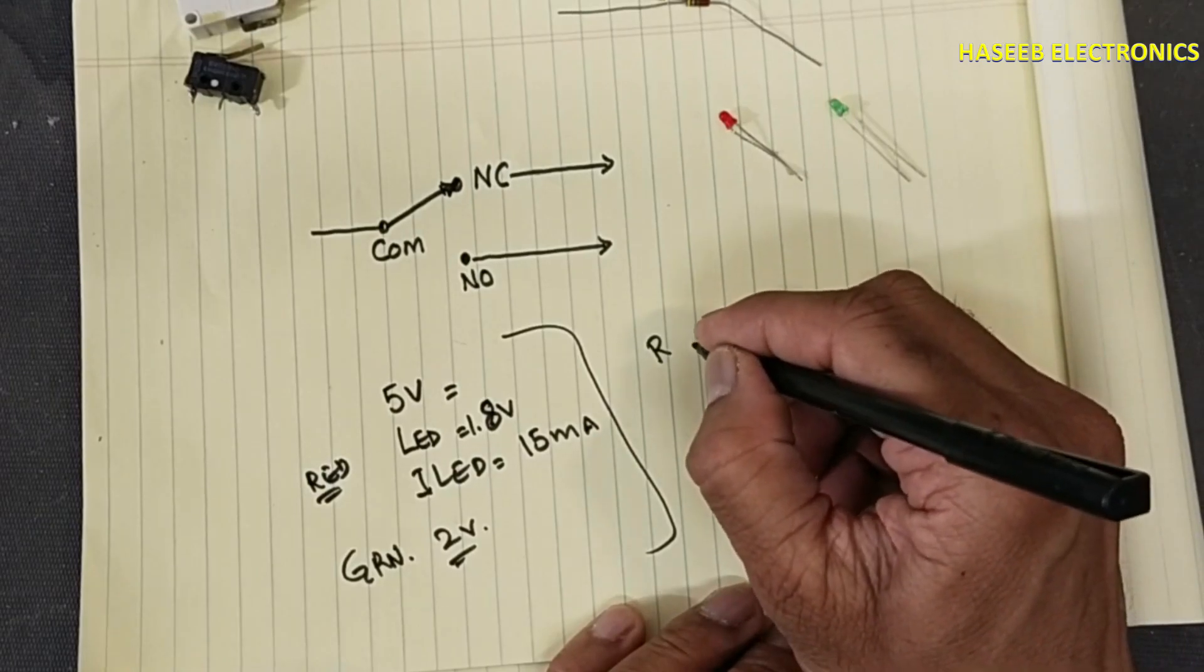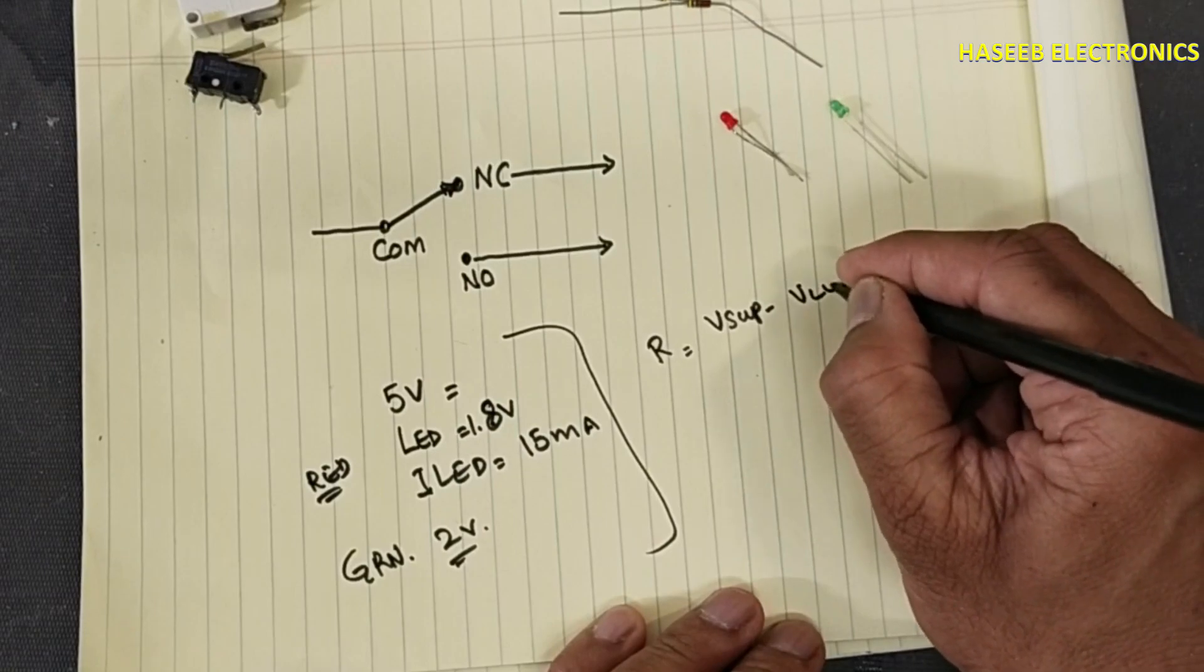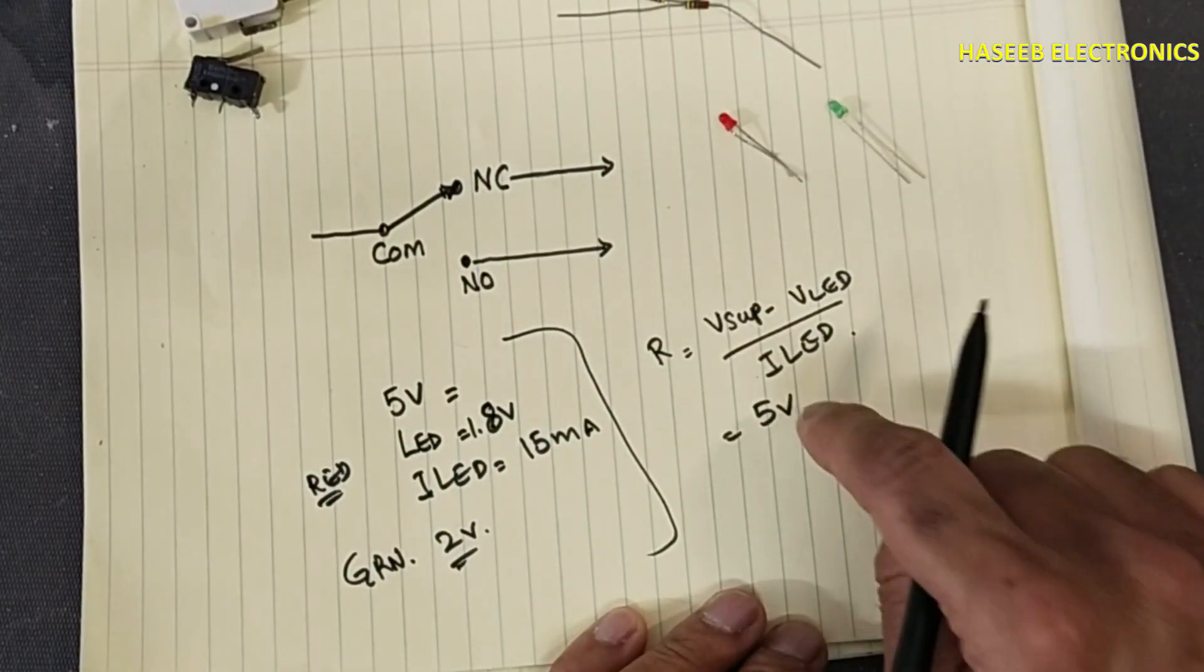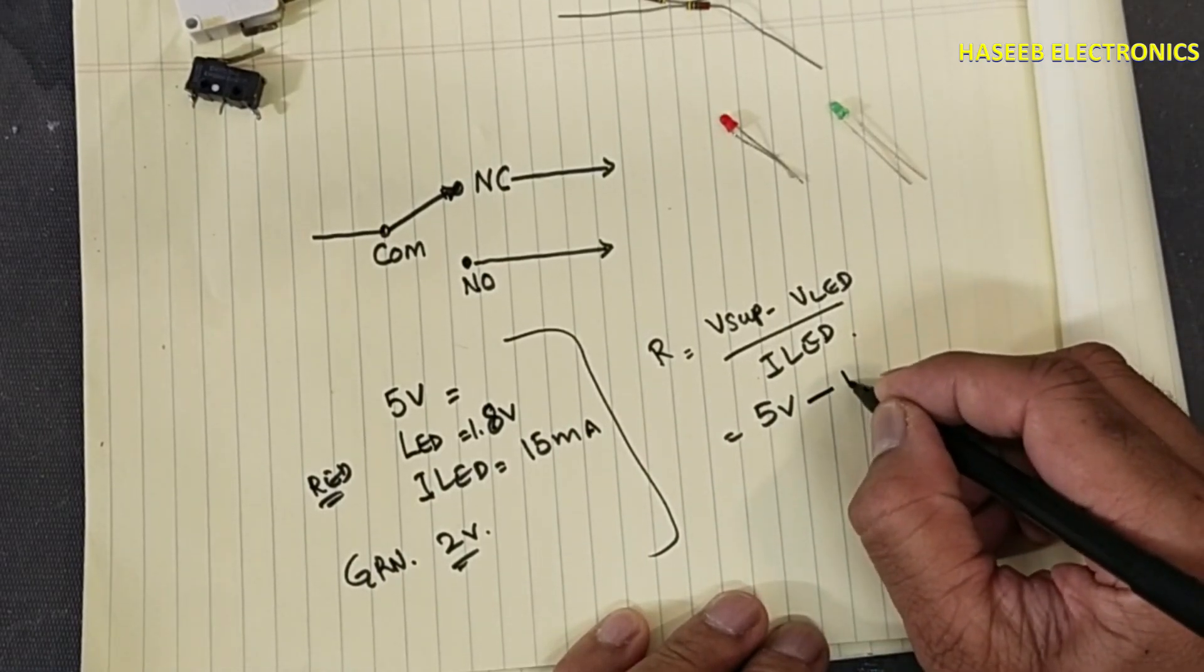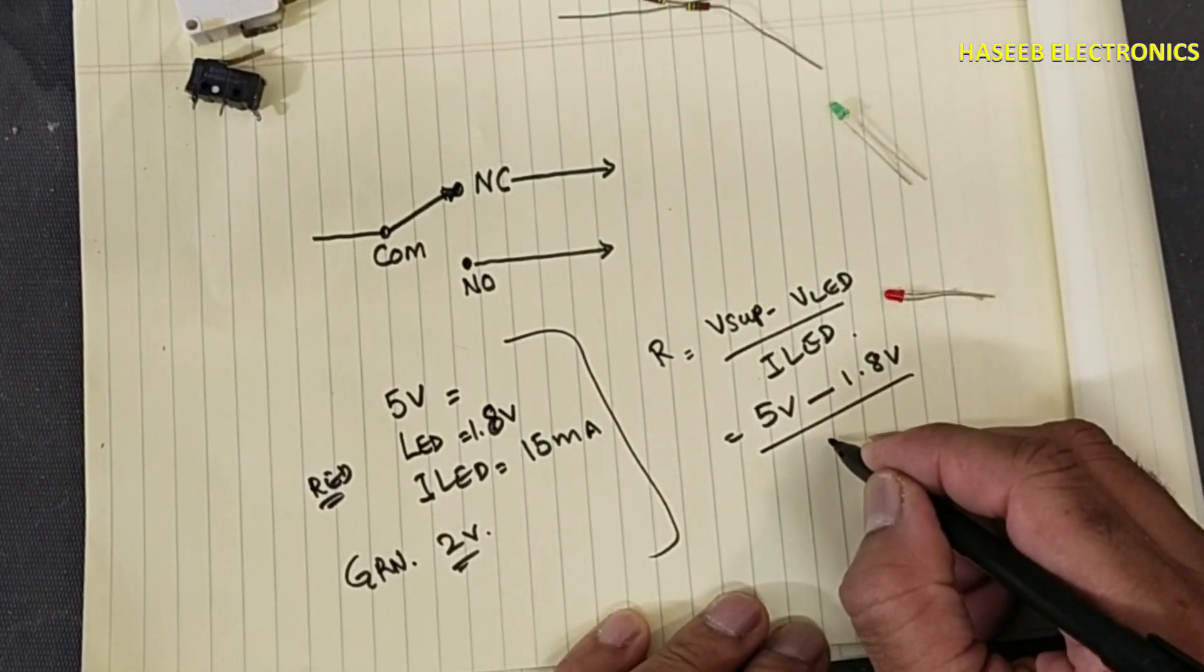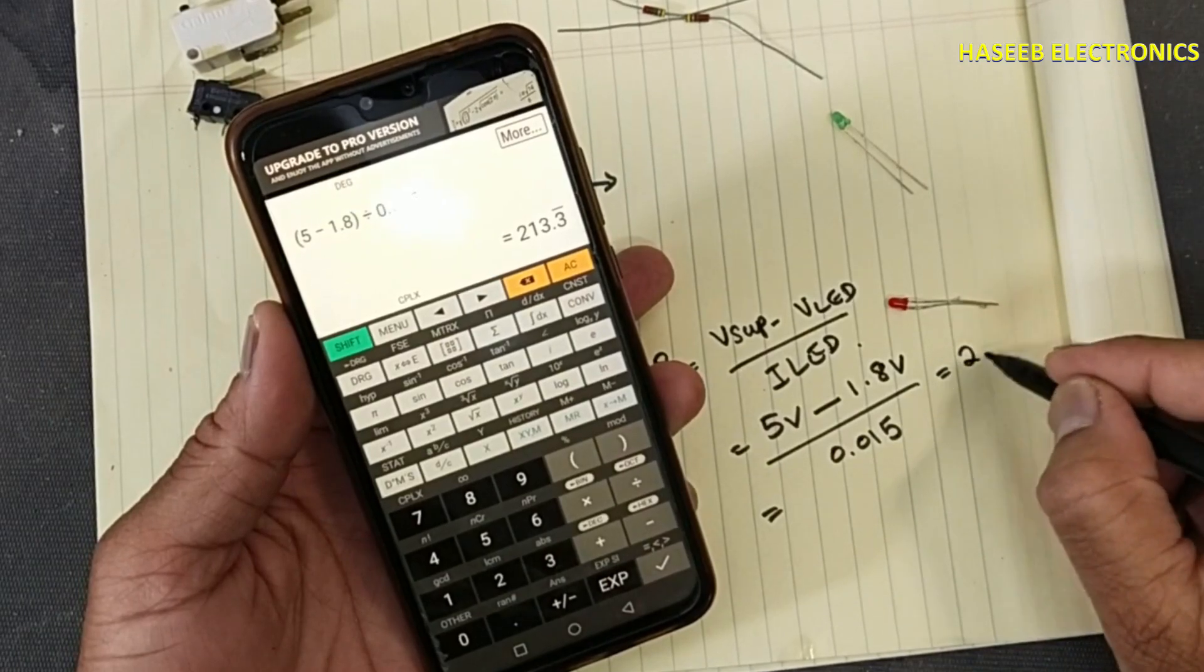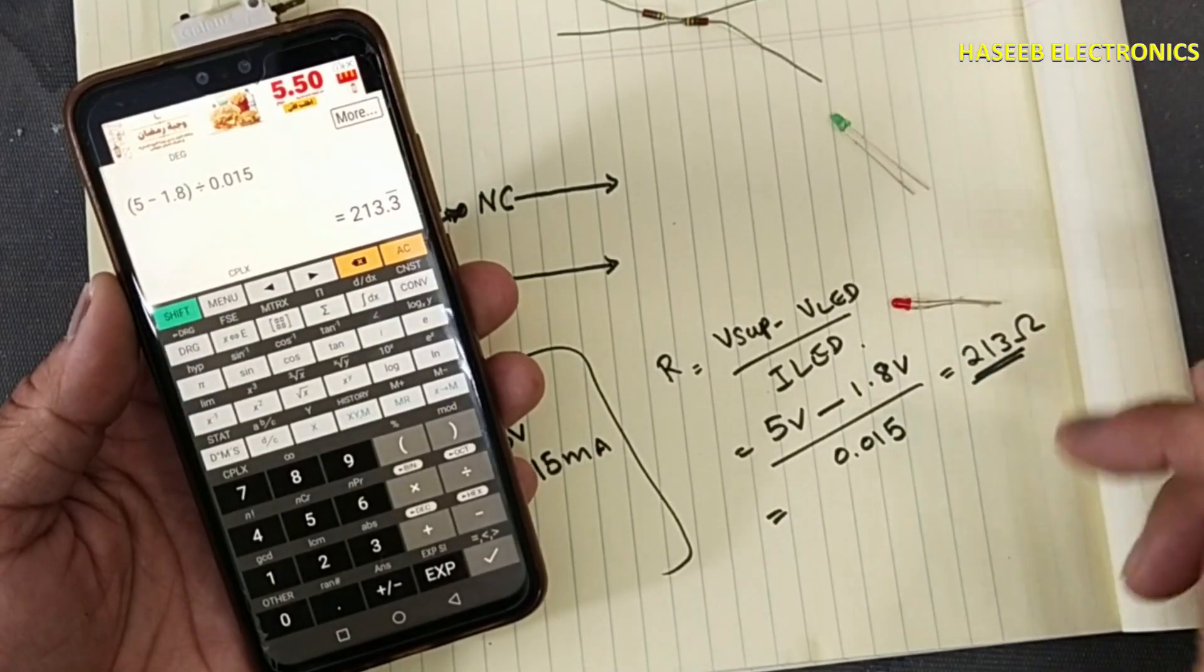A resistor that will come in series. R is equal to V_supply minus V_LED divided by I_LED. We supply 5 volt. If you will use more than this supply, you will write your voltage here. Minus 1.8 volt, that is for red LED, and 0.015, 15 milliampere. It is 213 ohm resistors, so we will use the next available limit, that is 220 ohm.